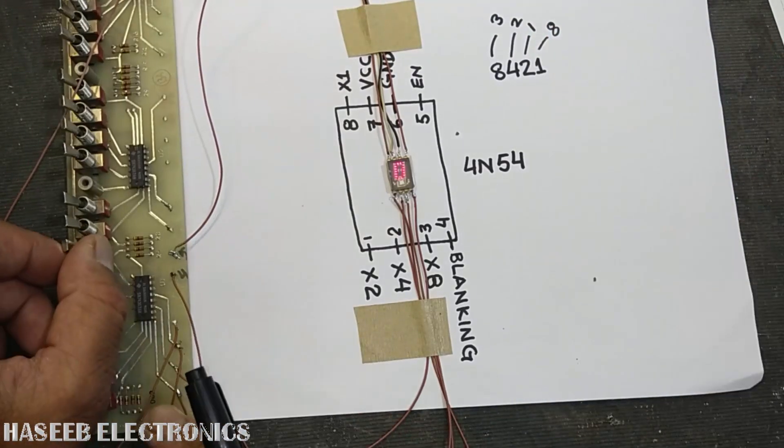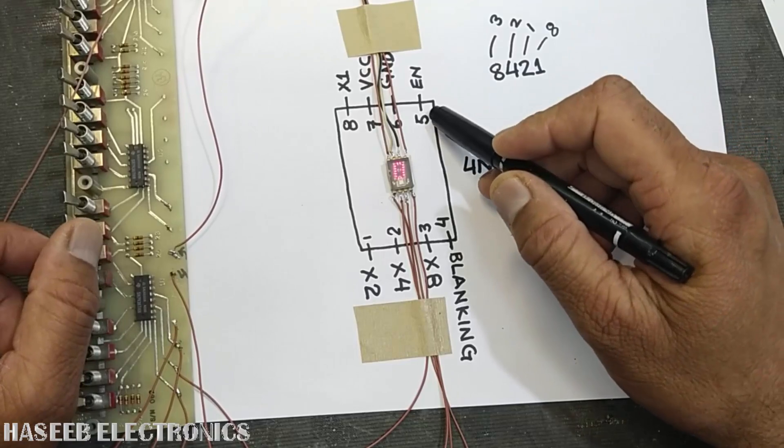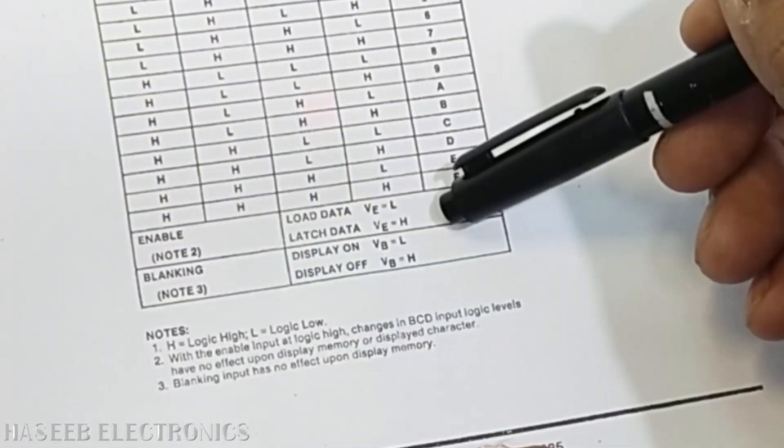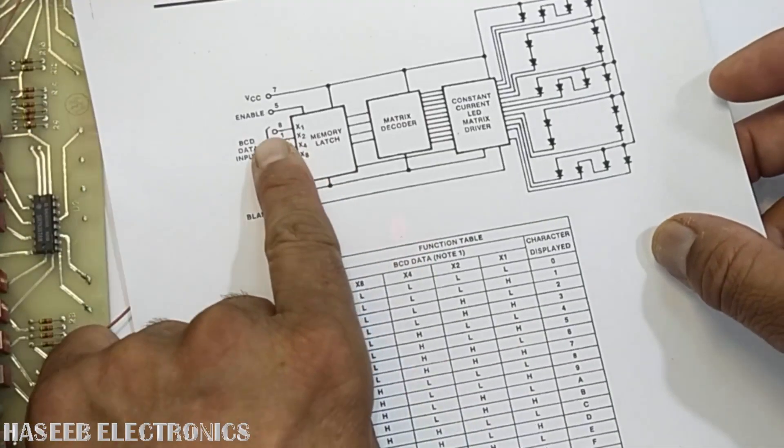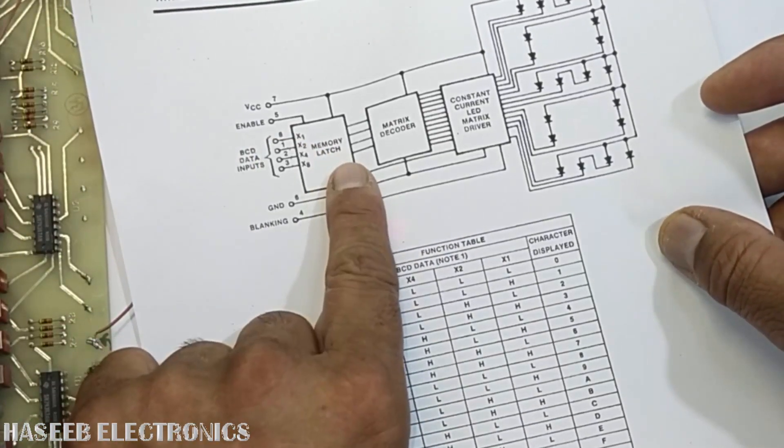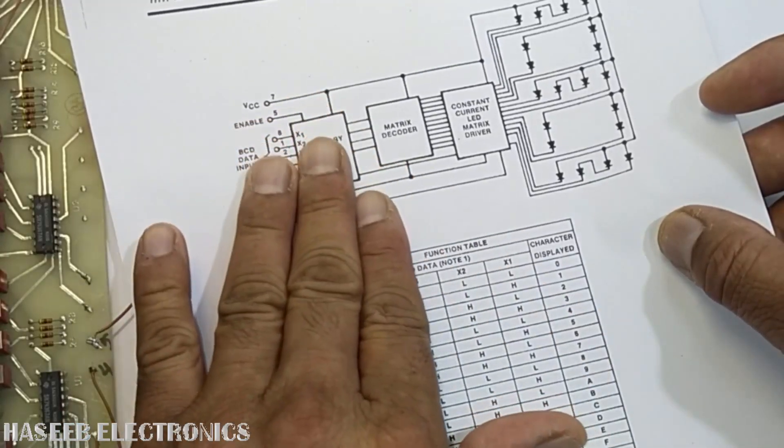Then it has the enable pin. The enable pin is used to load the data in the memory. When it is low, it will allow the data to activate the latch. If it is high, the memory will lock and it will display the last indication.